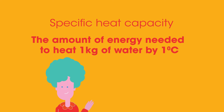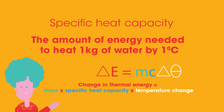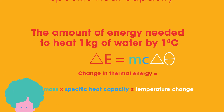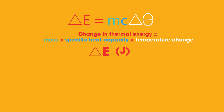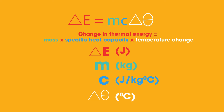The value is specific to water, hence the name. These three quantities can be connected by a formula: ΔE = mcΔθ, or change in thermal energy equals mass times specific heat capacity times temperature change. Here ΔE is measured in joules, m in kilograms, c in joules per kilogram per degree Celsius, and Δθ in degrees Celsius.